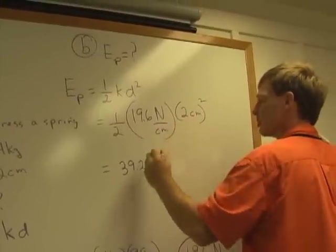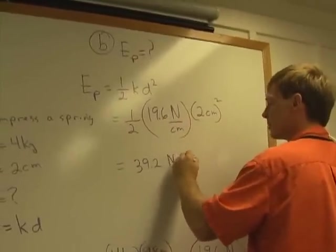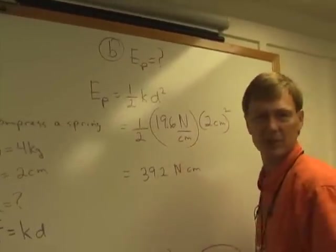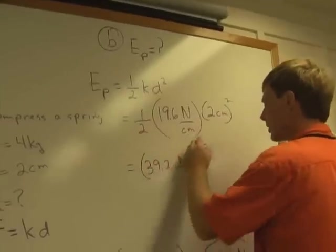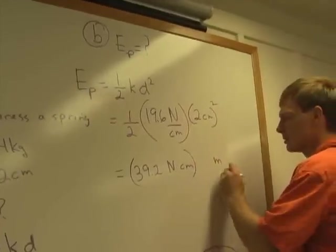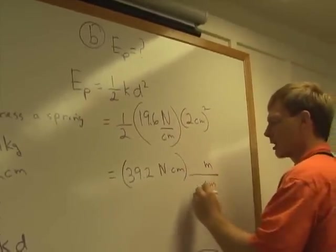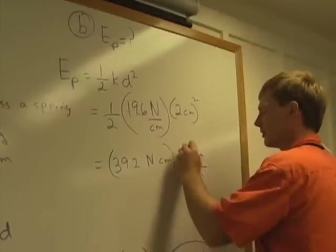I'm going to get rid of one of these centimeters, but there will be one left, newton centimeters. That's not a very convenient set of units. So I'm going to figure out how to get rid of that. I need meters on the top, centimeters on the bottom, 100 centimeters in a meter.